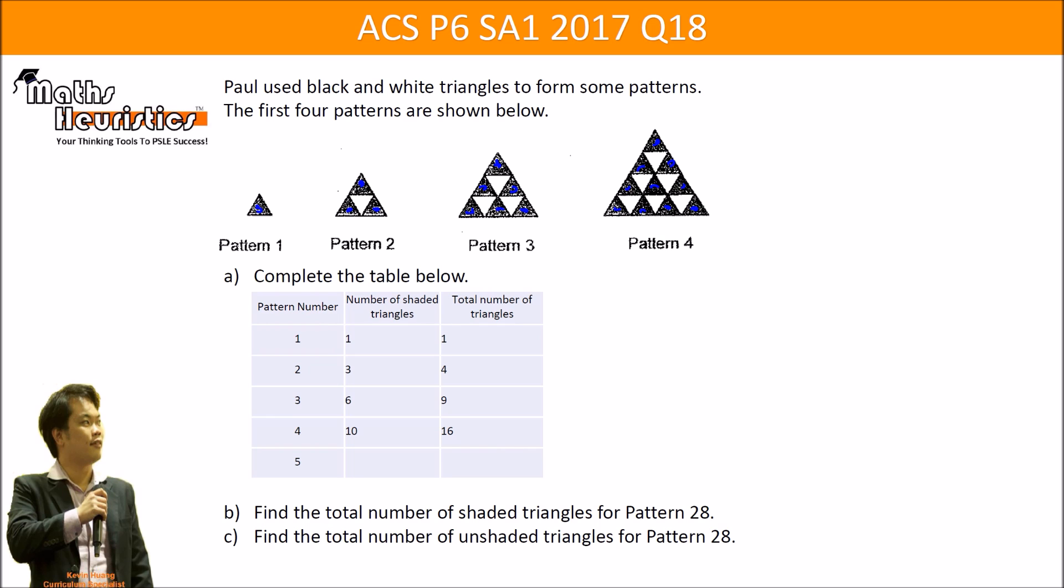Part A, we are supposed to complete the pattern table below. But before we do that, let's observe how the pattern changes because in a pattern question the change is usually the most important. From figure 1 to figure 2 we see that 2 black triangles were added. From pattern 2 to pattern 3, 3 black triangles were added, and in pattern 4, 4 black triangles were added. So we can deduce that the number of black triangles that will be added should be equal to that pattern number itself.